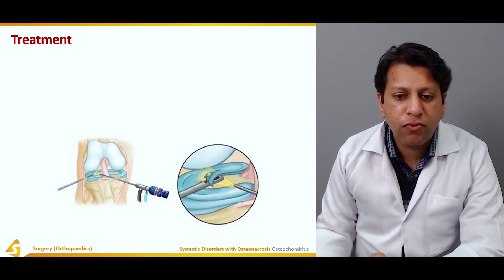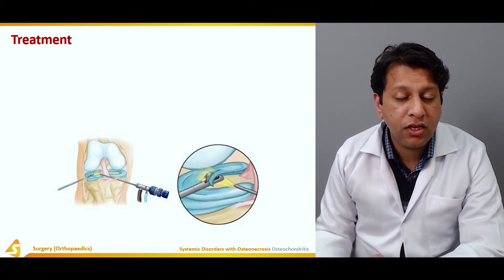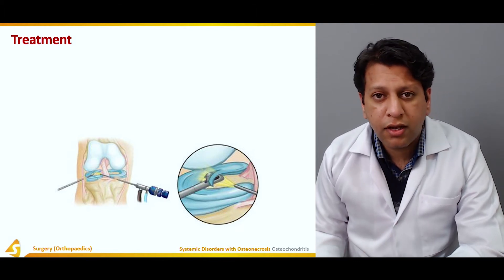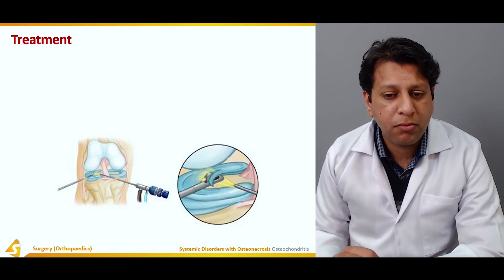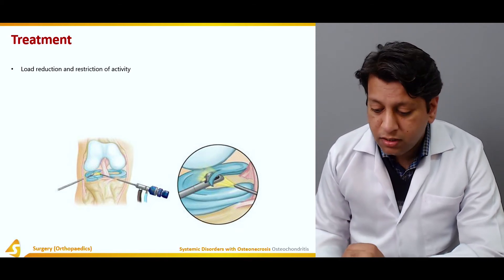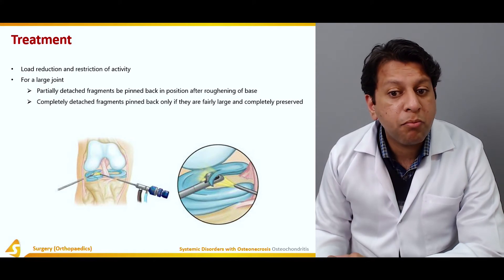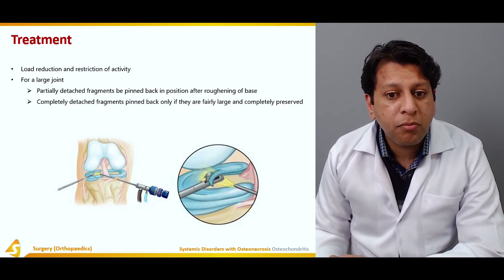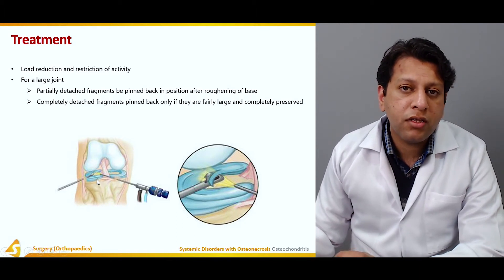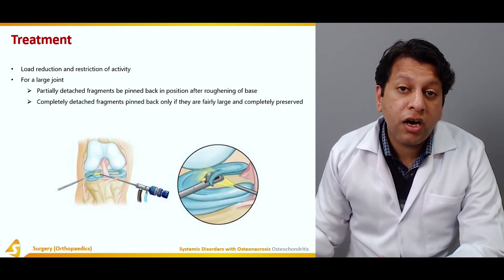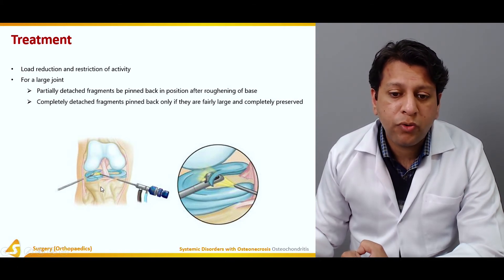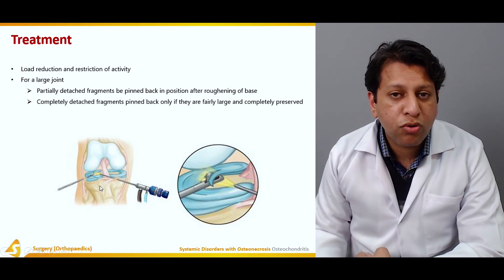Treatment depends on which joint and which area is involved. For the knee and elbow, it can be done via arthroscopy. For the ankle or other joints, sometimes arthroscopic treatment is used and sometimes not — it may simply be activity restriction depending on the grade. For large joints, partially detached fragments may be pinned back in position after roughening of the base. Completely detached fragments may be pinned back only if they are fairly large and well preserved. Very small loose bodies in the knee can be removed, while large pieces should be fixed back to prevent articular surface loss, using screws arthroscopically or by an open technique.